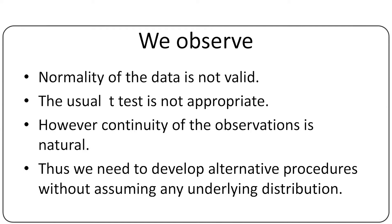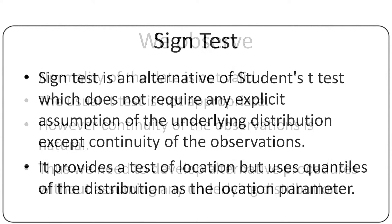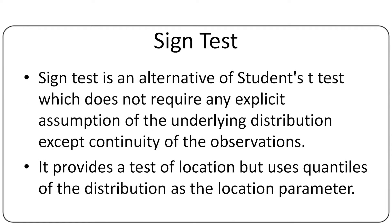However, continuity of the observations is natural. Thus, we need to develop a procedure without assuming the form of the underlying distribution except continuity. The sign test is an alternative to the t-test which does not require any assumption regarding the underlying distribution except continuity. However, sign test provides a test for quantiles, which are often a measure of location. Since we are not assuming any particular distribution, the average may not exist, but quantiles always exist.